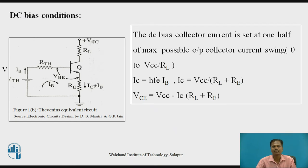Now let us consider DC bias conditions for the series-fed class A power amplifier. The figure shows a class A power amplifier with the Thevenin equivalent circuit for voltage divider bias using resistors R1, R2 and resistor RE. VTH is the Thevenin equivalent voltage applied at the base of the transistor to turn it on, and RTH is the Thevenin equivalent resistance in the base circuit. The DC bias conditions are set such that the maximum possible output collector current is set at one half of the maximum possible output collector current swing, in the range 0 to VCC/RL.